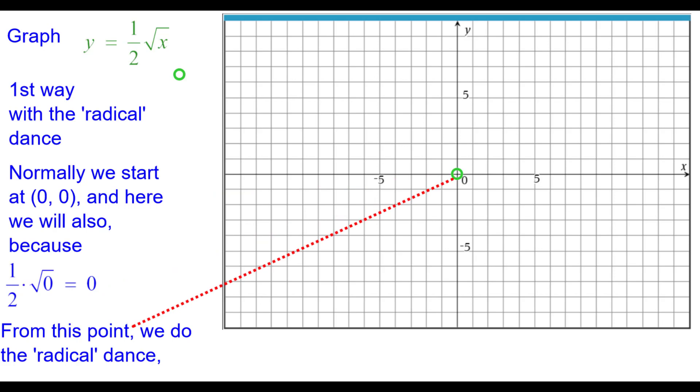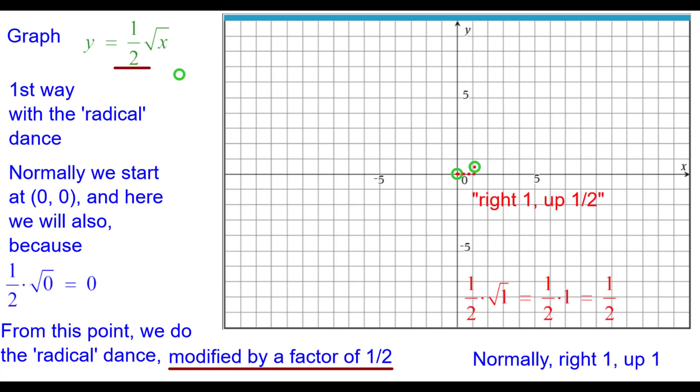From this point we do the radical dance that will be modified by a factor of 1 half, this coefficient. Normally it's right 1 up 1 but here it's going to be right 1 up 1 half. Normally right 4 up 2 but in this case it will be right 4 up 1. And normally square root of 9 is 3 would be right 9 up 3 but here it will be right 9 up 3 halves.